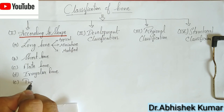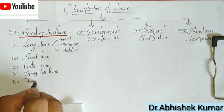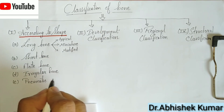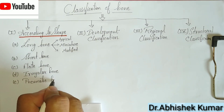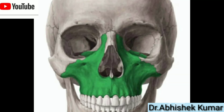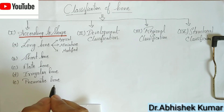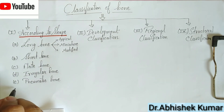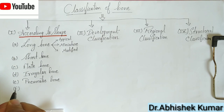Then come to the pneumatic bones. Certain irregular bones contain large air spaces lined by epithelium. Examples are the maxilla, sphenoid, and ethmoid.